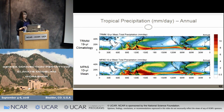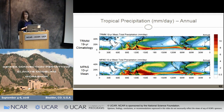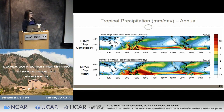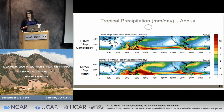We also wanted to look at tropical precipitation — shown here is annual precipitation in mm/day, with the TRMM 19-year climatology on top and our MPAS 10-year mean on the bottom. The ITCZ, especially in the Central Pacific, is well represented in the model. However, there are a couple of key differences: we are seeing a large overproduction of precipitation in the Western Pacific, which might be linked to an overactivity of TC frequency. The other notable difference is a shift in the precipitation maximum in the equatorial Atlantic, likely related to a shift in the African easterly jet that may be pushing precipitation further west.